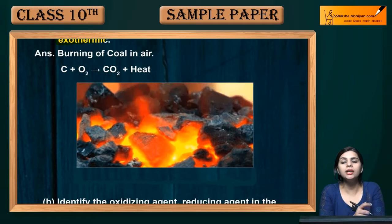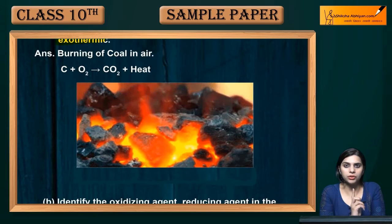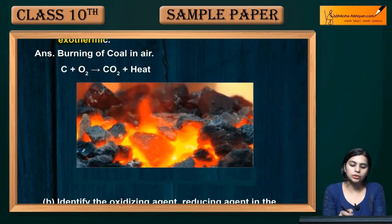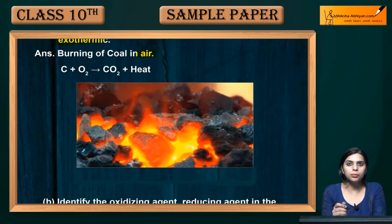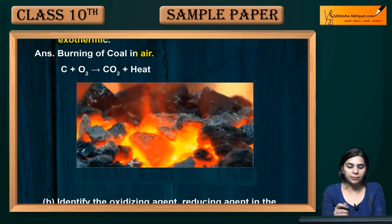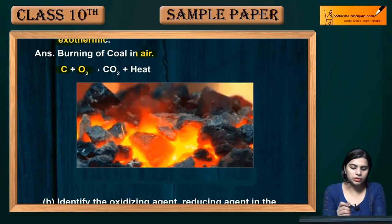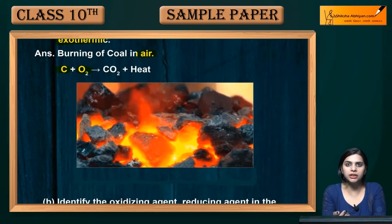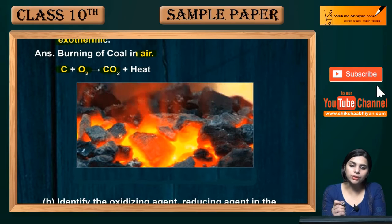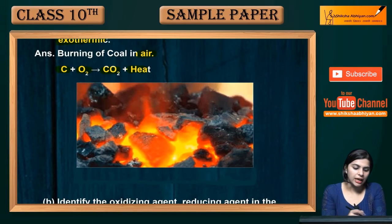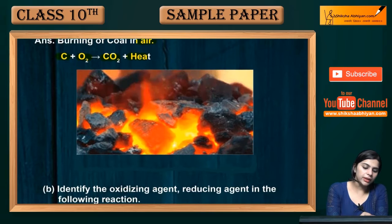In a combination reaction, two reactants combine to form a product. For example, burning of coal in air: coal is carbon, and oxygen is present in air. When burned in the presence of air, carbon dioxide plus heat is liberated.